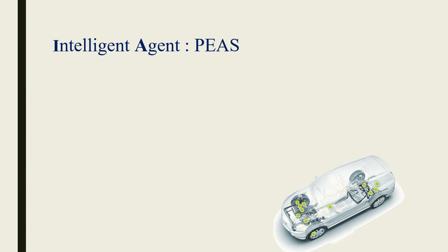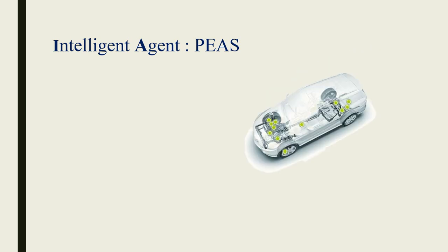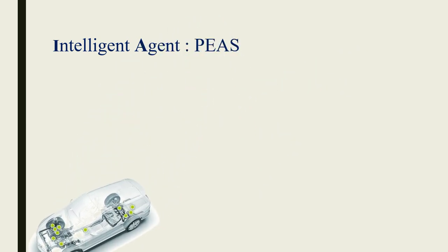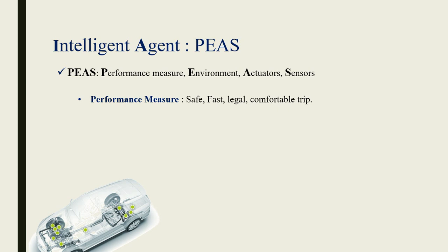Now let's see what PEAS means for this intelligent agent — the self-driven car. PEAS stands for Performance measure, Environment, Actuators, and Sensors. The performance measure for a self-driven car is that the drive has to be safe, it can be fast, but it has to be legal, and the trip has to be comfortable. Whether the car is driving straight or on a bumpy ride, the sensors must work intelligently to meet these performance measures.